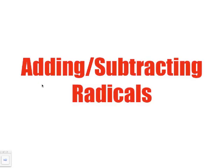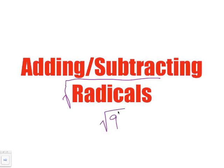Adding and subtracting radicals. To reiterate from previous videos, a radical is any symbol written inside one of these symbols, which we typically know as a square root. So if we wanted to find the square root of 9, this symbol here is a radical symbol. Now some of the rules for adding and subtracting radicals are coming up.